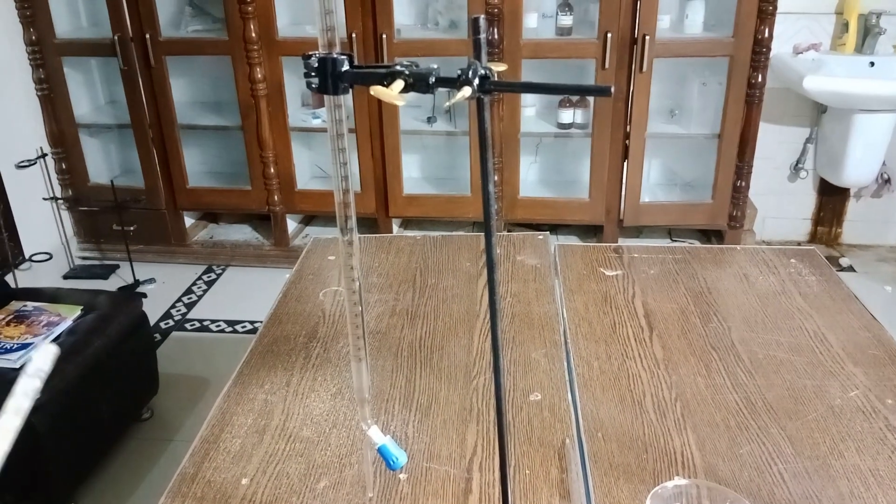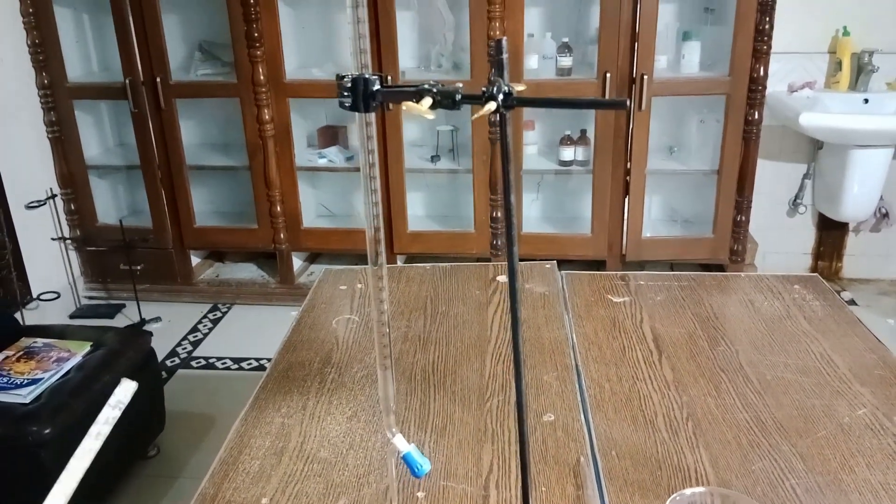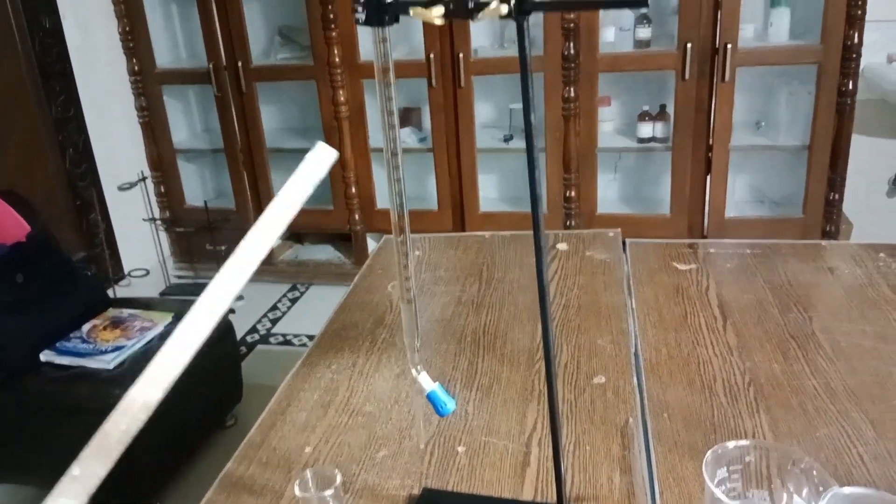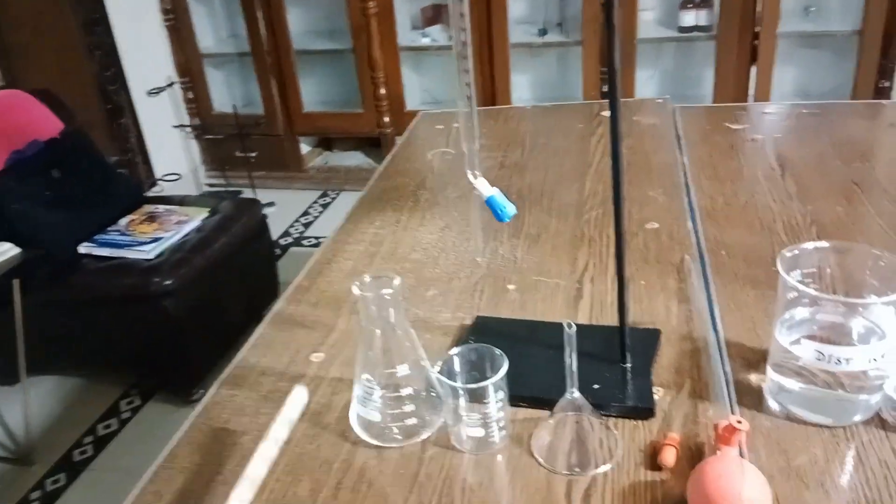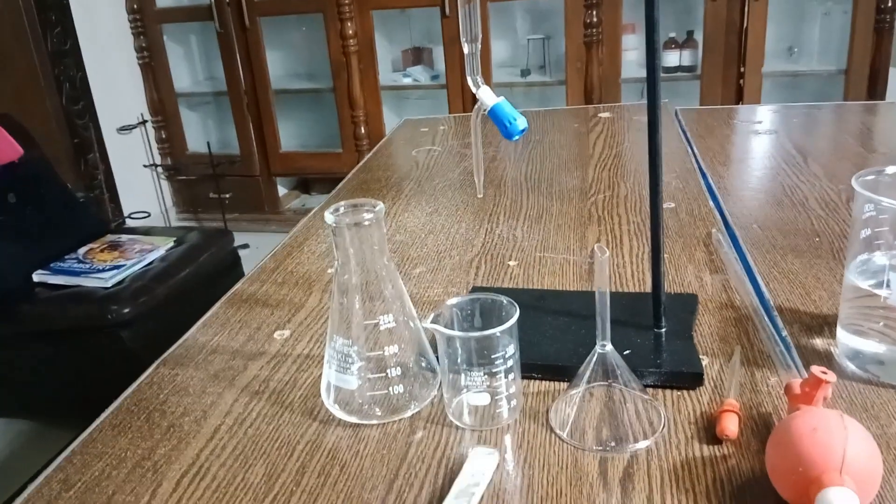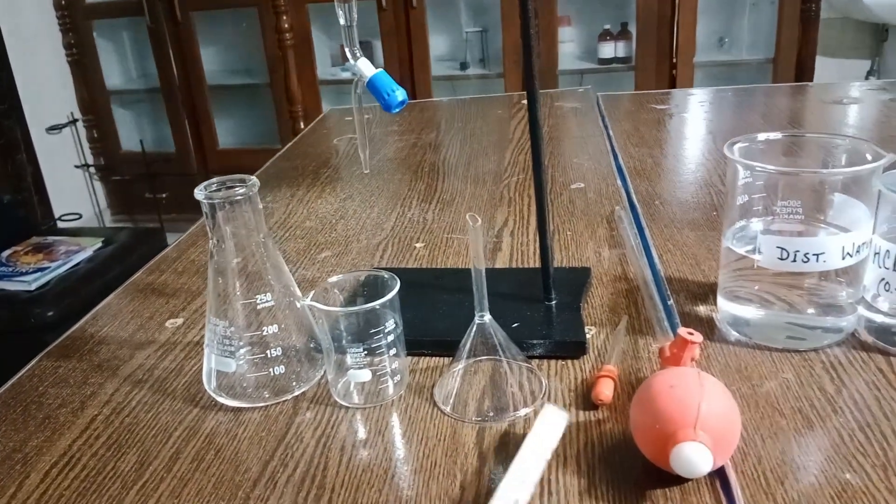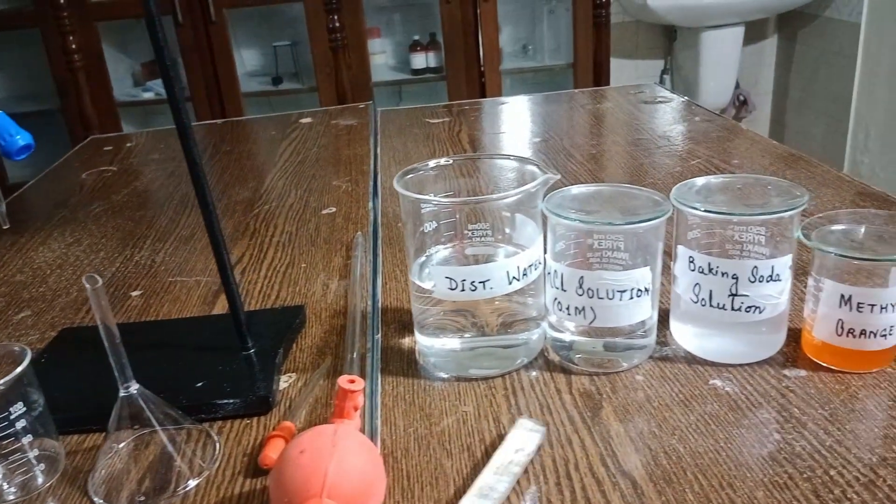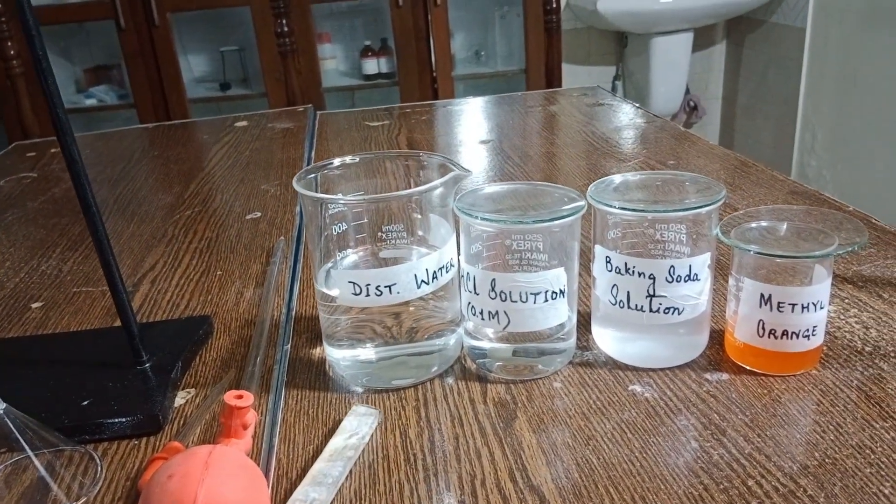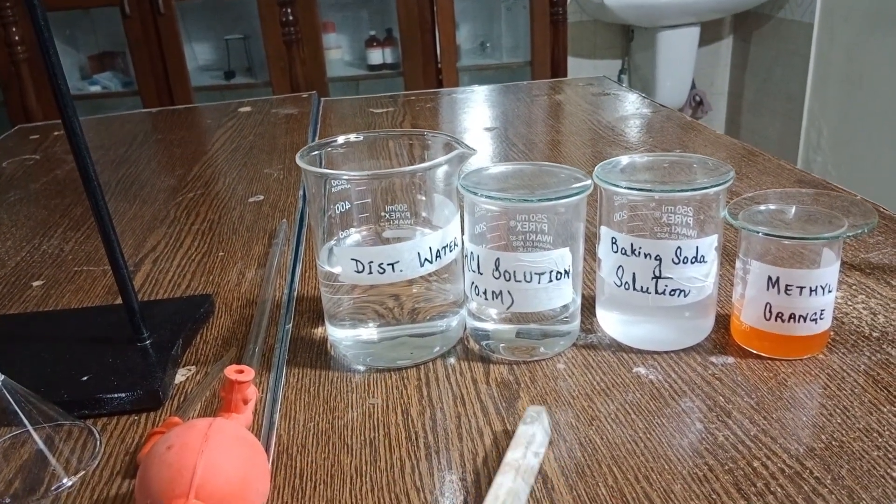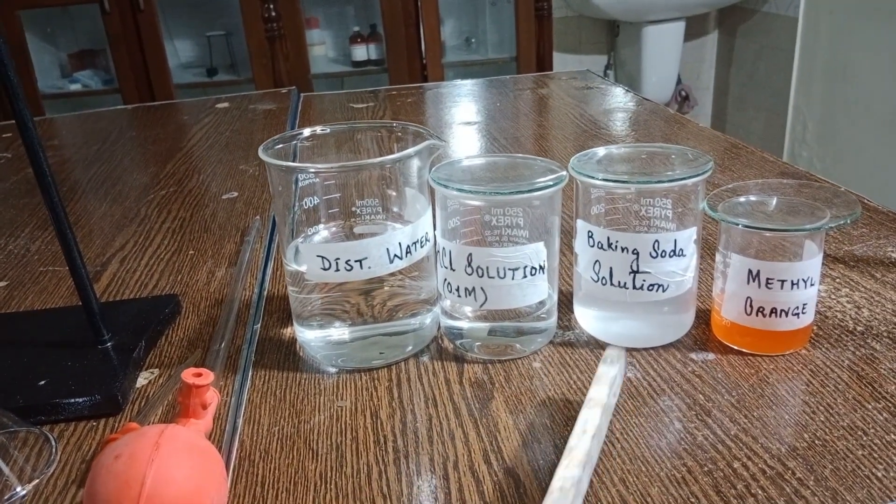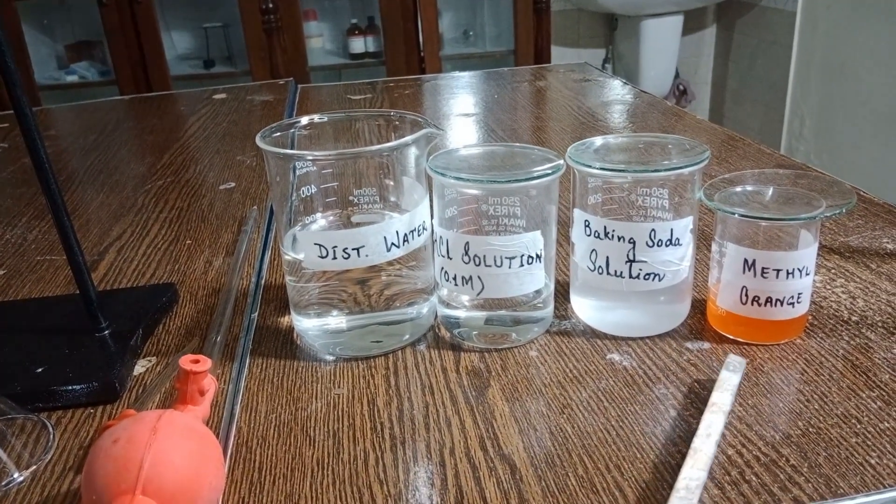For this practical, glassware used includes burette, conical flask, beakers, funnel, dropper, pipette and pipette filler. For apparatus washing and rinsing we need distilled water. For titration we need 0.1 molar hydrochloric acid solution and baking soda solution. We need methyl orange as indicator.